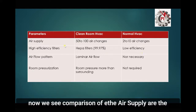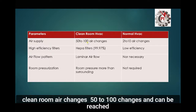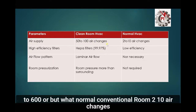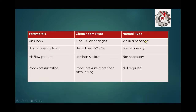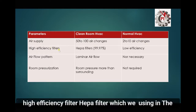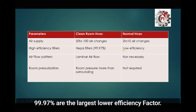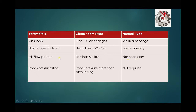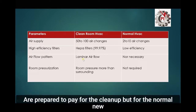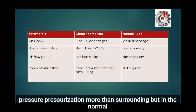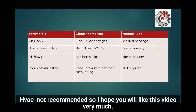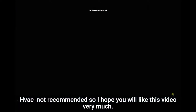In summary, comparing clean room versus conventional HVAC: air changes range from 50 to 100 and can reach 600 for clean rooms, versus 2 to 10 for conventional AC. HEPA filters at 99.97% efficiency are used in clean rooms versus low efficiency filters in normal systems. Clean rooms use laminar airflow versus non-specific airflow in normal AC, and maintain positive room pressure above surrounding areas, which is not required in conventional HVAC. Thank you very much.